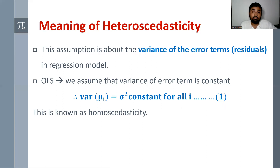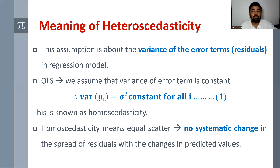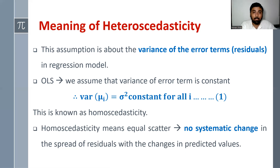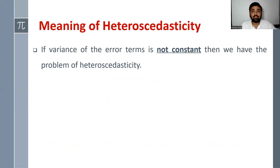Homoscedasticity means equal scatter — there is no systematic change in the spread of residuals with changes in predicted values. But if the variance of the error term is not constant, then we have the problem of heteroscedasticity, meaning the assumption of homoscedasticity is violated.